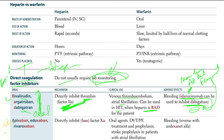Moving on, we have the Factor Xa inhibitors: apixaban, edoxaban, and rivaroxaban. All these '-xabans' directly inhibit Factor Xa. These are oral agents.